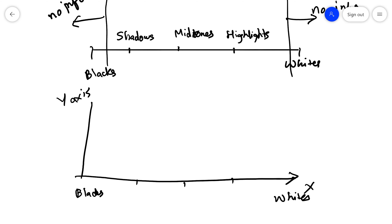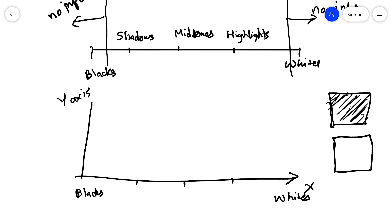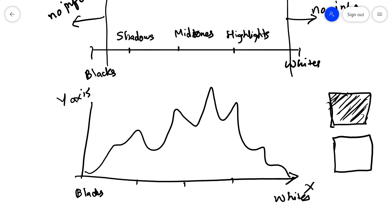The y-axis of a histogram represents how much of your image is in each tonal region. A completely black image would show everything on the far left. A completely white image would show everything on the far right. Normal histograms are generally a mix — with information in the blacks, whites, shadows, highlights, and a lot in the midtones.